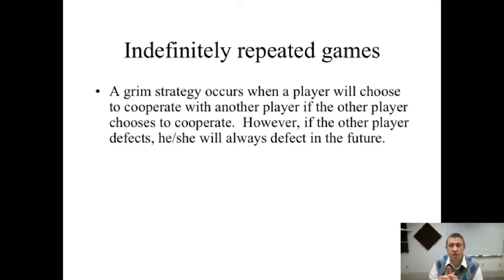One of the strategies we'll say our players could play is the tit for tat strategy, which we've already described in the previous lesson. The other one is the grim strategy. The grim strategy occurs when a player will choose to cooperate with another player as long as the other player continues to cooperate. However, if the other player ever defects and chooses not to cooperate, our player will always defect in the future. Hence the name grim. If you ever choose not to cooperate, I will never cooperate with you again throughout the rest of time.